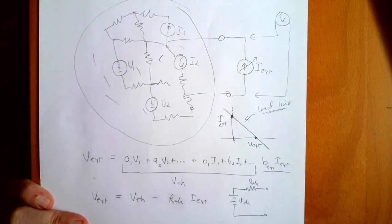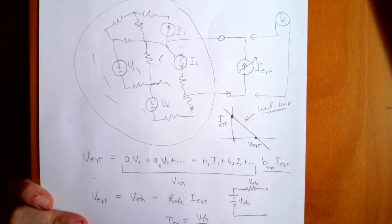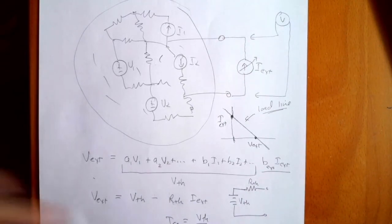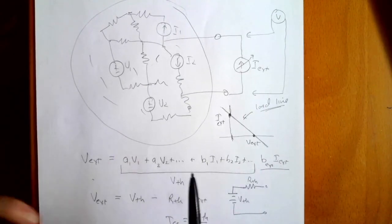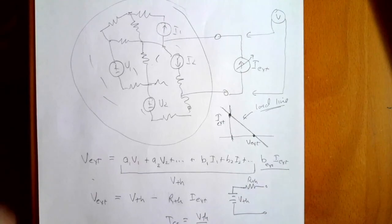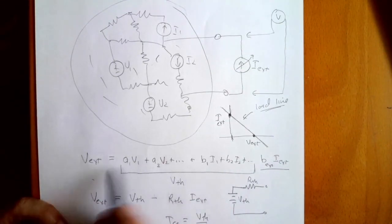So R Thevenin is simply the necessary resistance to generate the correct short circuit current. You can calculate R Thevenin two ways: you can either short the terminals, calculate the current, set that short circuit current equal to V Thevenin over R Thevenin, and solve for R Thevenin. Or you can simply set all the internal voltage sources to zero and set all the internal current sources to zero — then the Thevenin resistance is just the resistance of the network with all the sources set to zero.